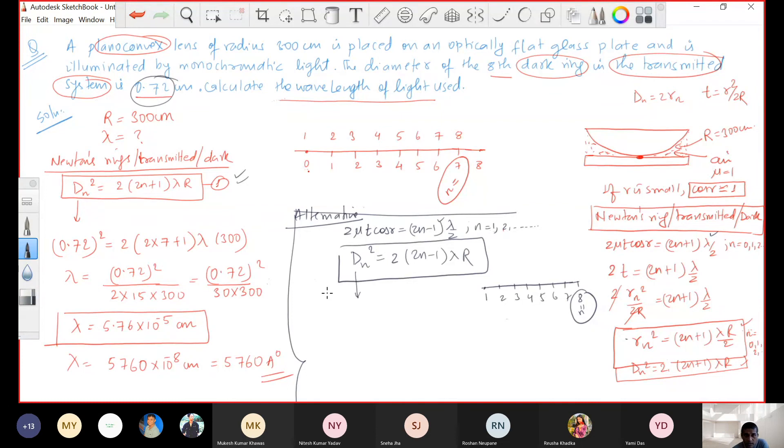Dn will be 0.72. This is 0.72 squared equals 2. And here we have 2 into 8 minus 1. I can calculate R is 300.